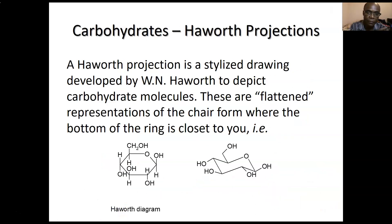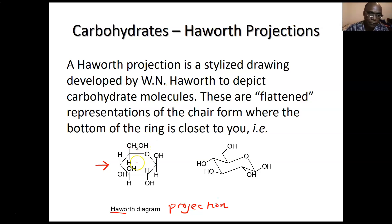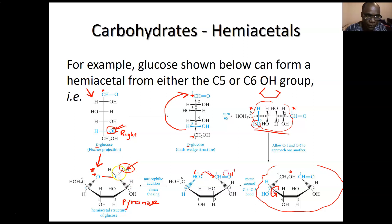You always use the OH on the second-to-last carbon at the bottom of the Fischer projection. There are two types of ring representation: the flat Haworth projection or Haworth diagram, which helps you see who is down and who is up in the ring, and helps classify the alpha and beta anomers.